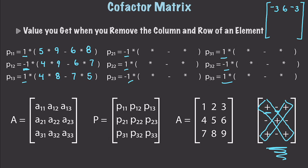Next: 2×9 minus 3×8, times negative one, gives a value of 6. Then 1×9 minus 7×3, times positive one, gives negative 12. Then 1×8 minus 7×2, and multiplying negative one times negative 6 gives a value of positive 6.